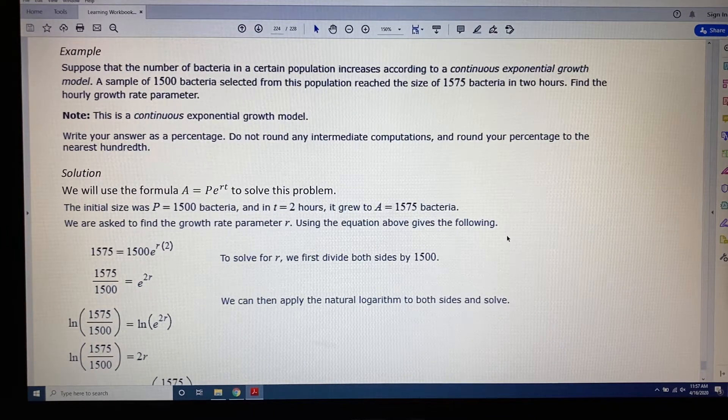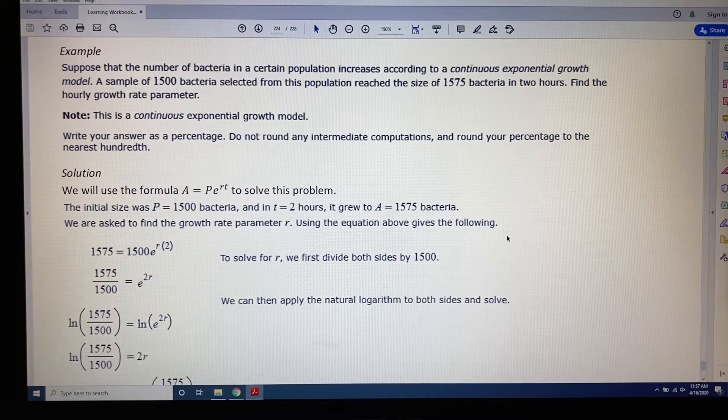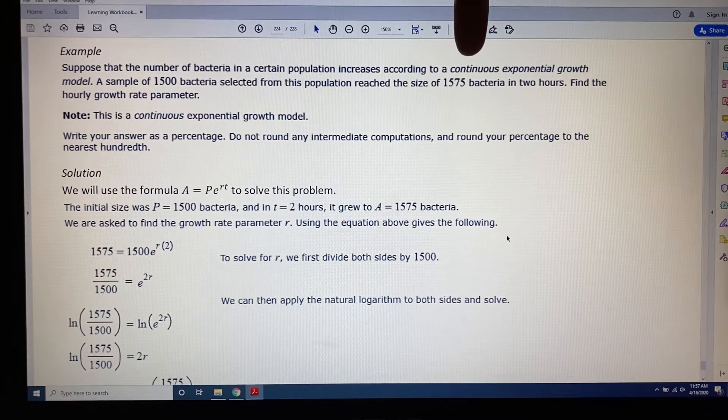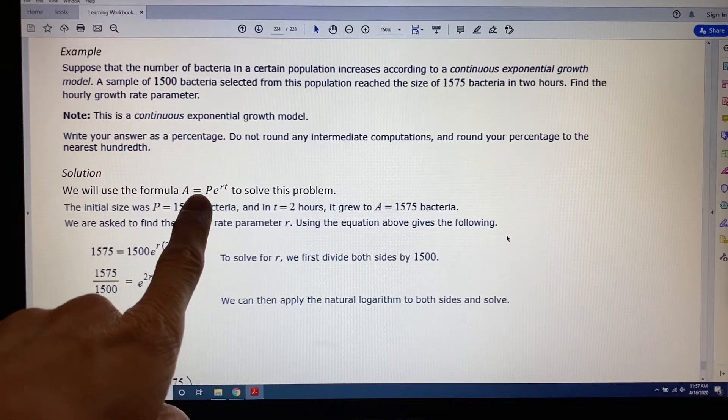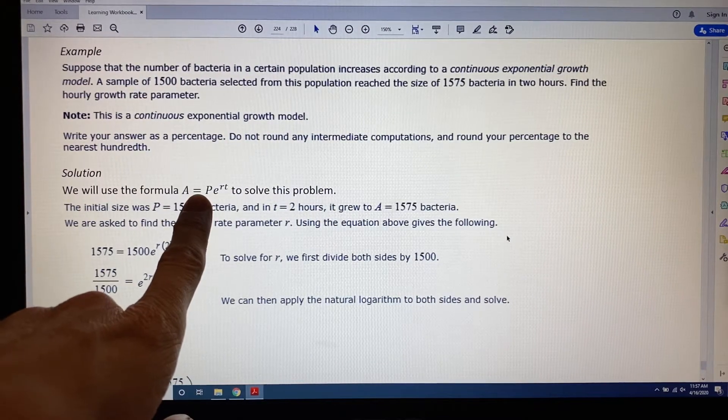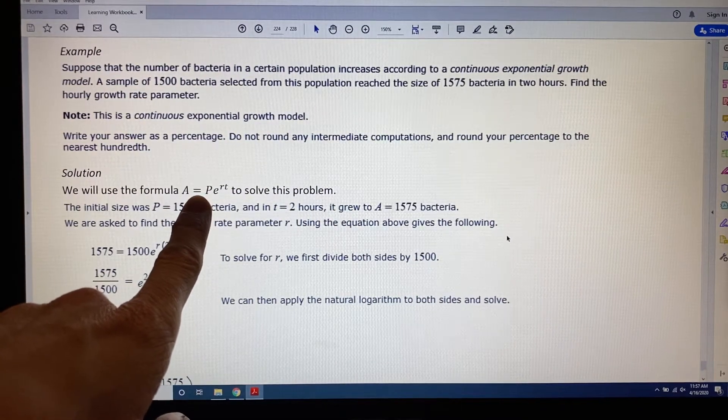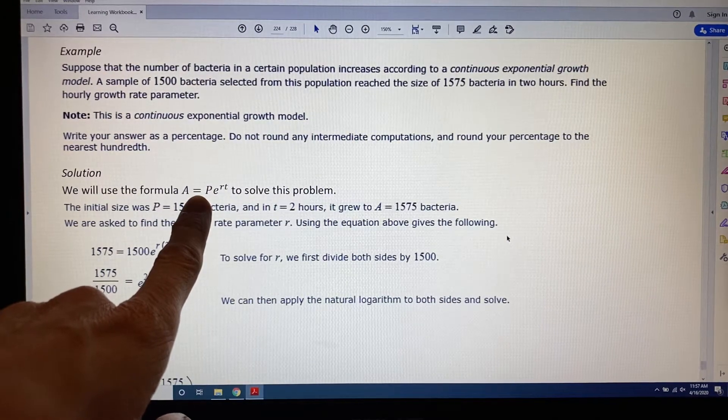Just as with the previous problem, we're going to look at some important characteristics of these instructions before we begin. The first most important thing is that this is a continuous growth model, which tells you what formula we will use: the PERT formula, A equals Pe to the RT. You could also use A of T equals A naught e to the KT if you'd like. They're the same formula.